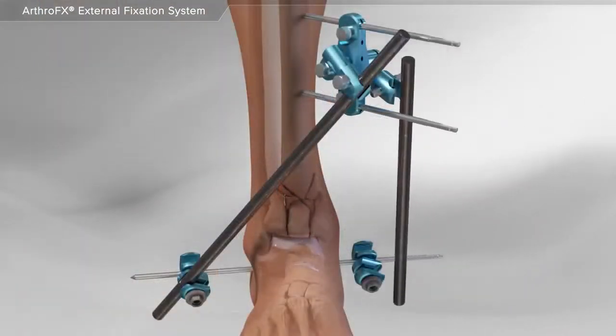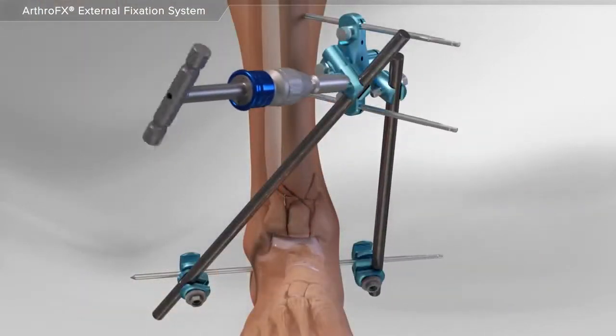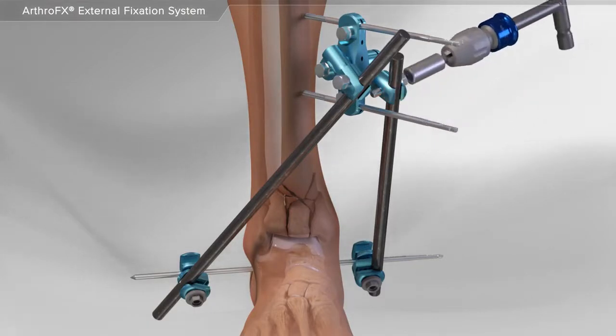Additional clamps are placed onto the pin in the heel bone, and then carbon rods are connected between the clamps and tightened.